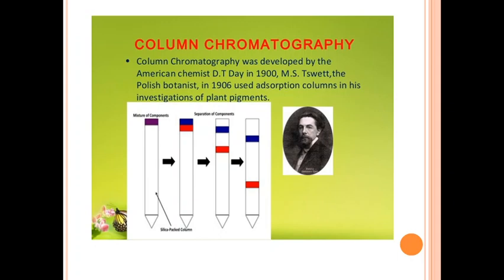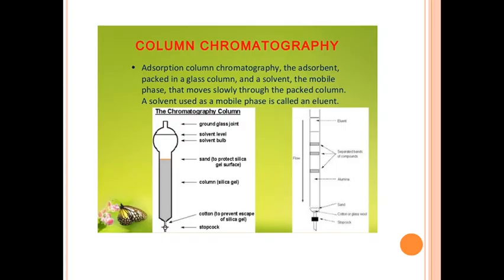Column chromatography was developed by the American scientist Mikhail Tsvet, a Polish botanist, in 1906, using adsorption columns. In column chromatography, the adsorbent is packed in a glass column and the solvent — the mobile phase — moves slowly through the packed column. The solvent used as the mobile phase is called the eluent, and the material that comes out is called the eluate.